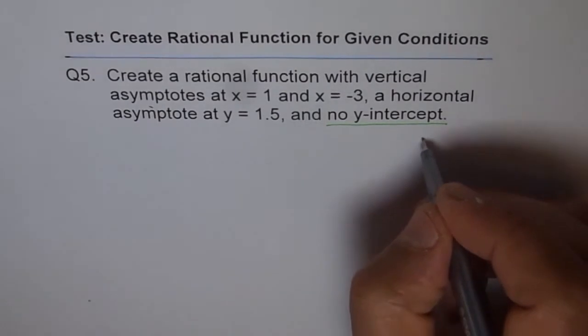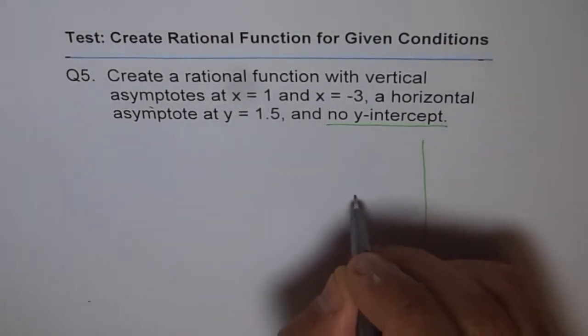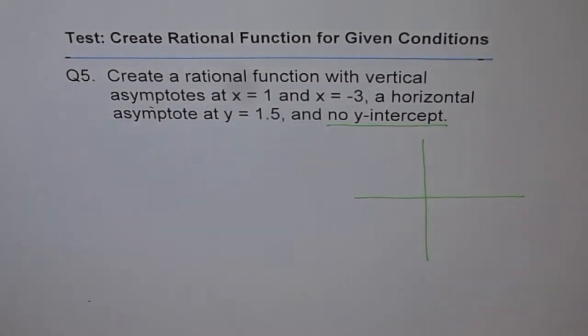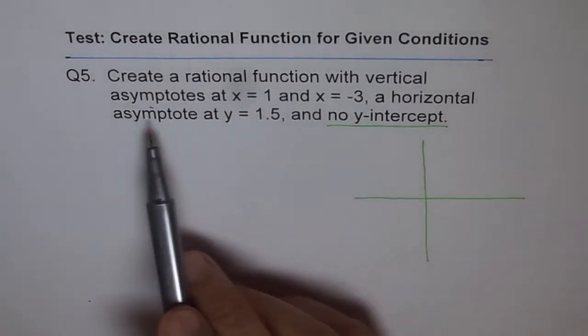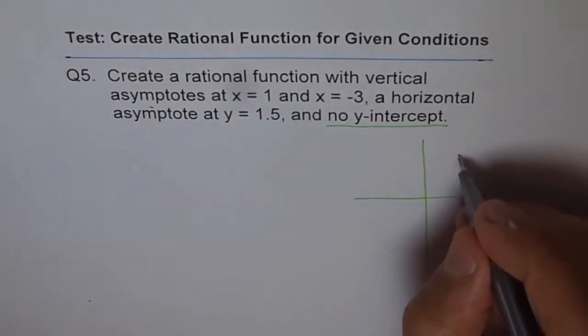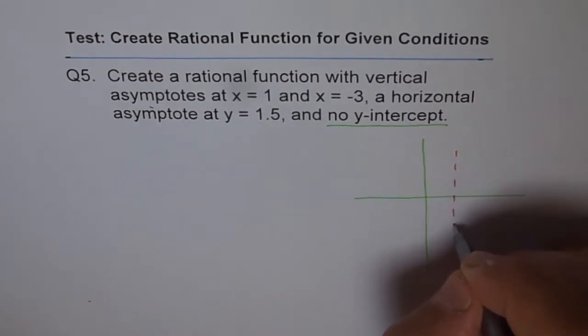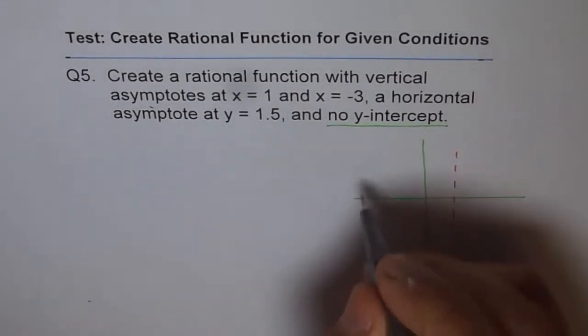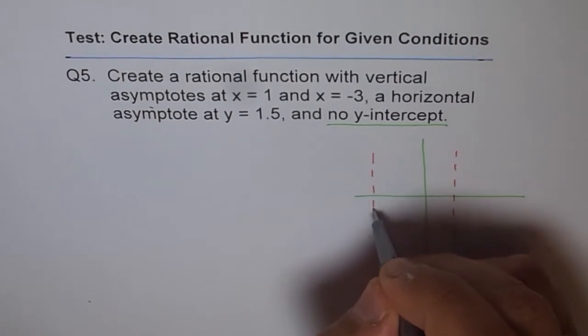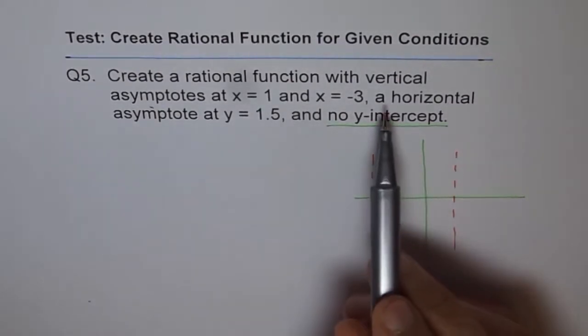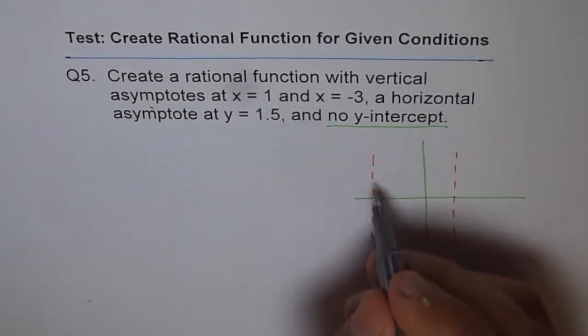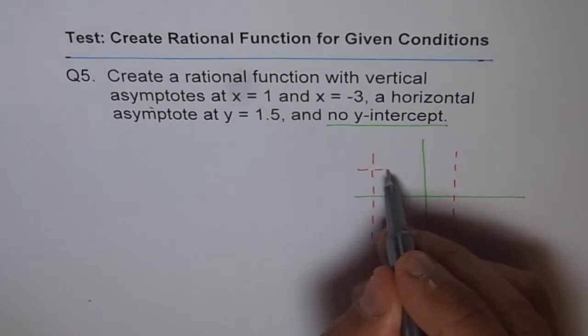Let's try to understand by rough sketch what we are trying to write an equation for. So we have here a rational function with vertical asymptotes at x equals 1. So let's say this is x equals 1 for us and at x equals minus 3. So let's say this is x equals minus 3. A horizontal asymptote at 1.5, so let's say that is 1.5.